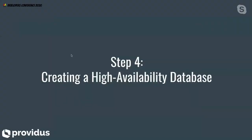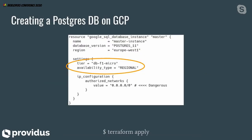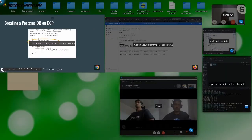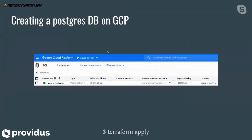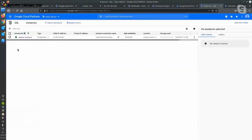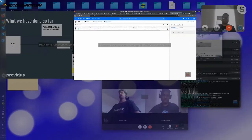Now what we are going to do is create a database, because most applications have to store data. Once again, we are going to use Terraform to create our database. We create a Google SQL database instance, set the database size, and also set the availability type to regional. We just type Terraform apply, and you can see that it creates the database on GCP. You can see that you have your instance created by that command.